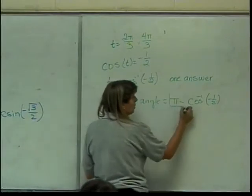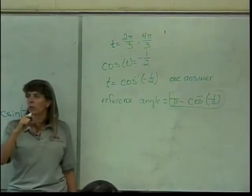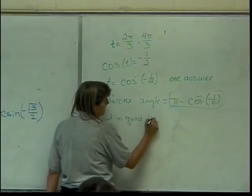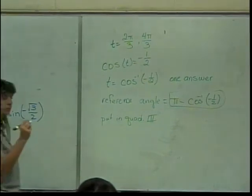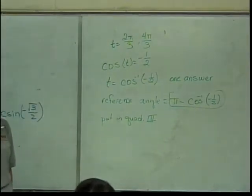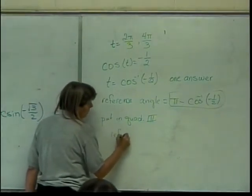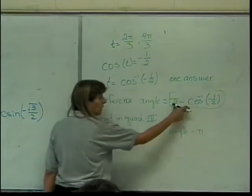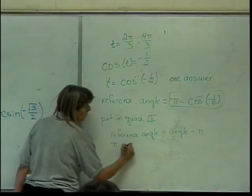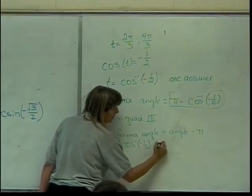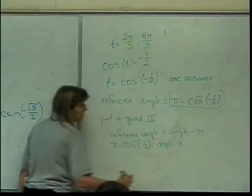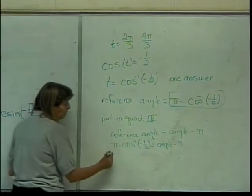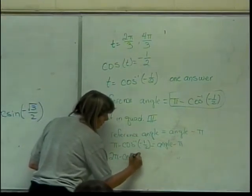Now I want to take this angle — that's my reference angle — and I want to put it in quadrant three. In quadrant three, how do I find my reference angle? Angle minus pi. So the reference angle equals the angle minus pi. That means this is pi minus the cosine inverse of negative one-half, equal to the angle minus pi. How do I solve for the angle? Add pi to both sides. When I add pi to pi I'll get two pi, and it'll be two pi minus the cosine inverse of negative one-half.